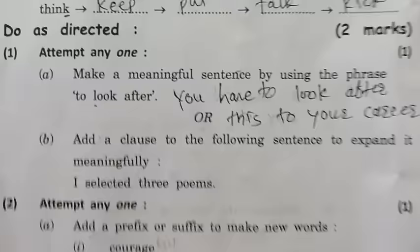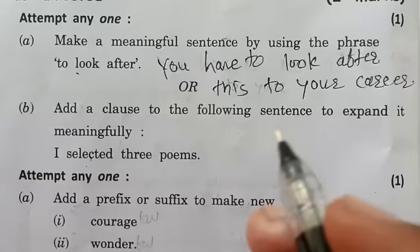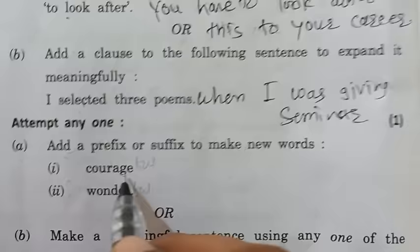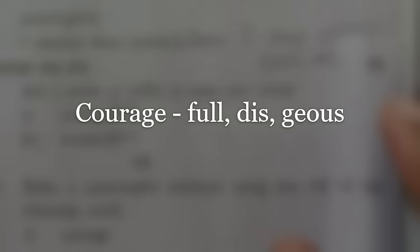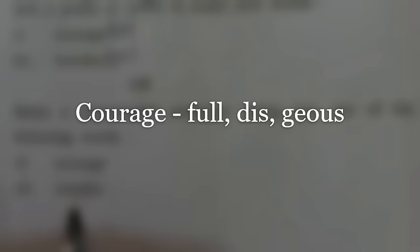Here is another sentence and we have to just add a clause: 'I selected three poems when I was giving a seminar.' This is the type of clause we can add. Then we have to add a prefix or suffix: 'courageful,' 'wonderful.' We also have to make sentences from these two words — 'He has courage to fight,' and 'He wonders about her future.'